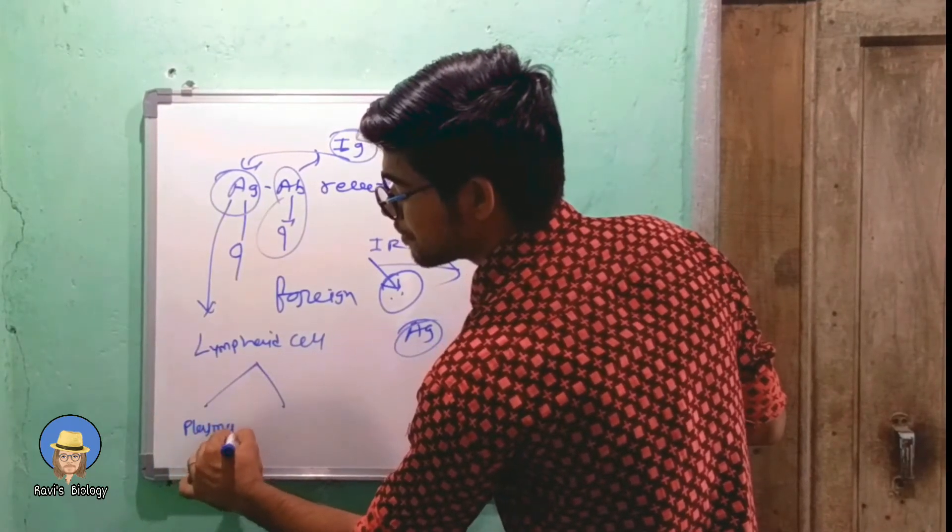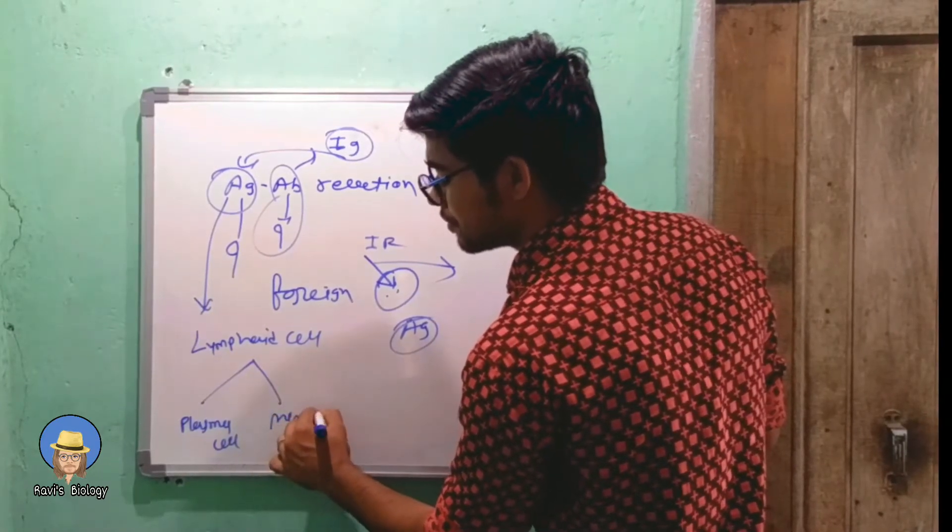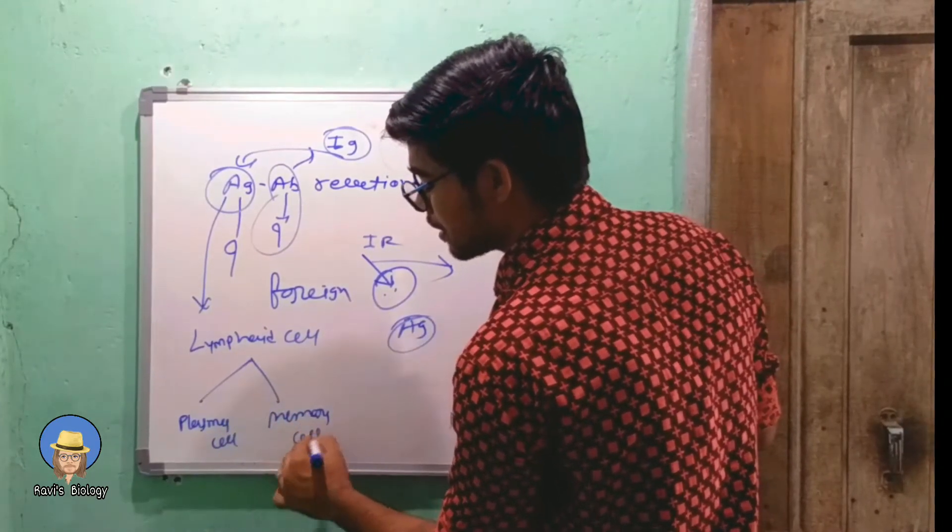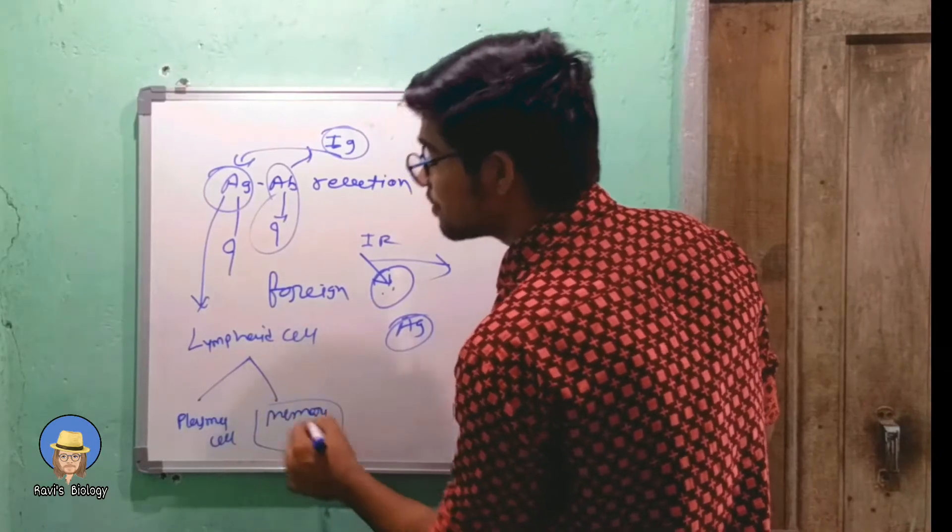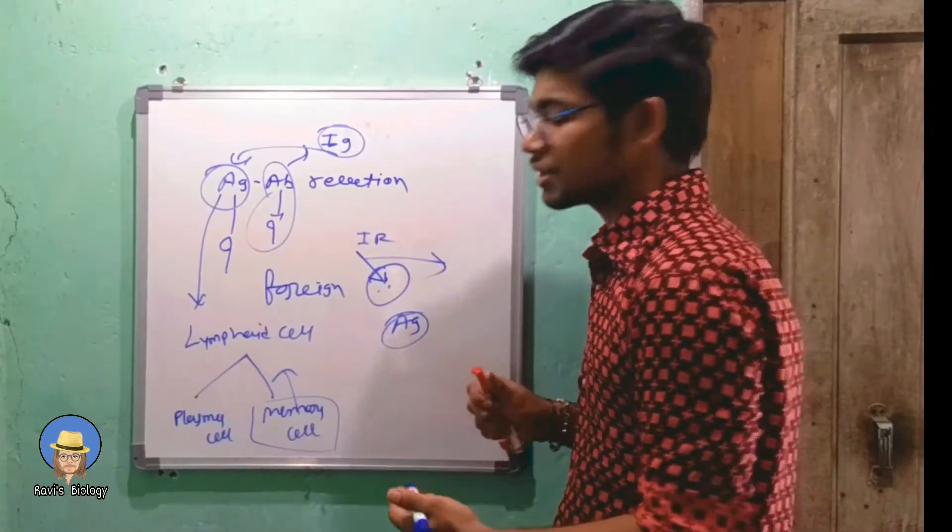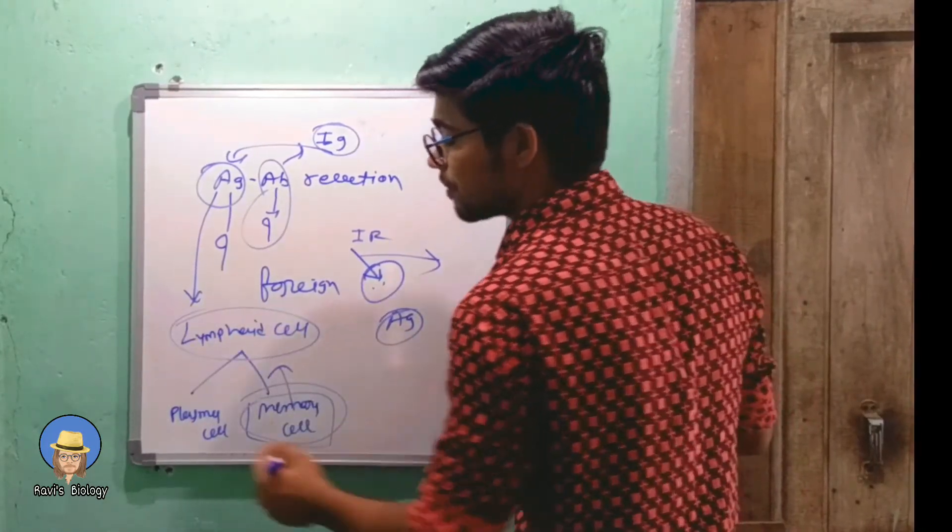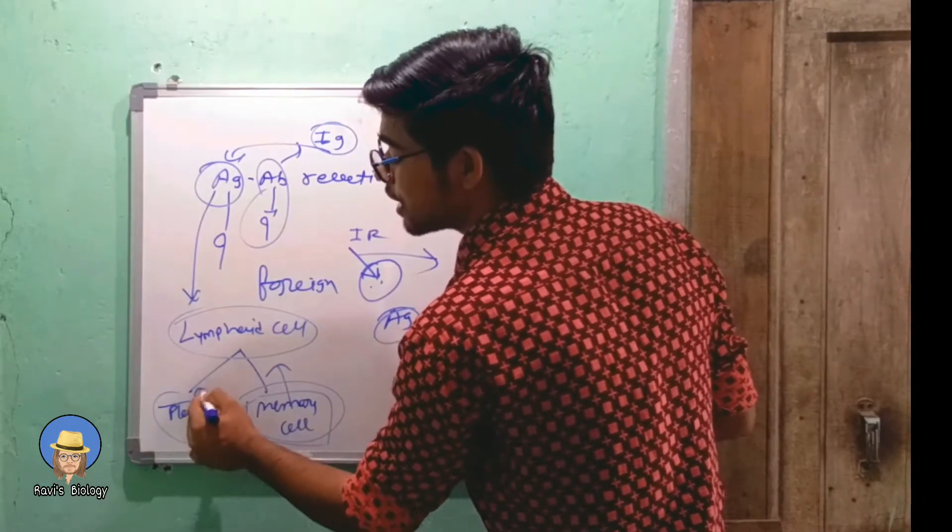Memory cell stores the formula of the antigen, so whenever the antigen comes a second time it will produce antibodies directly, not going into the lymphoid cell. The plasma cell produces the antibody against the antigen.